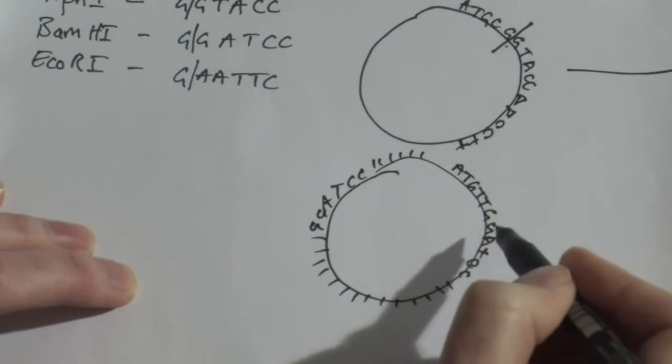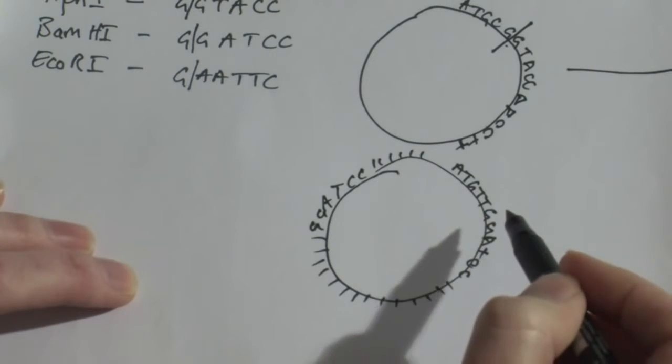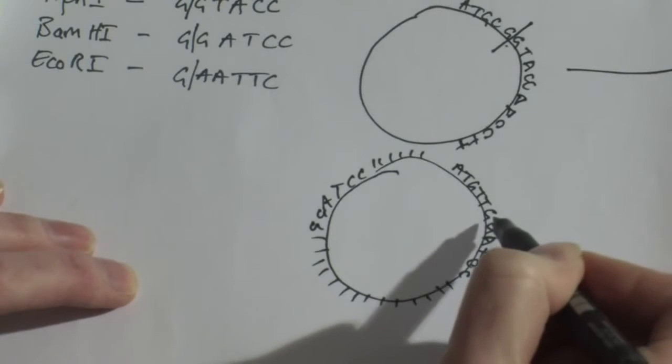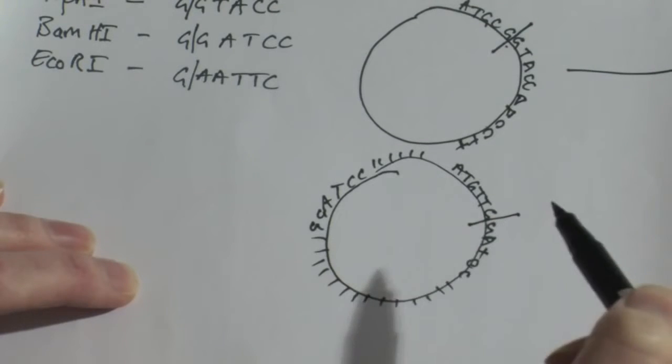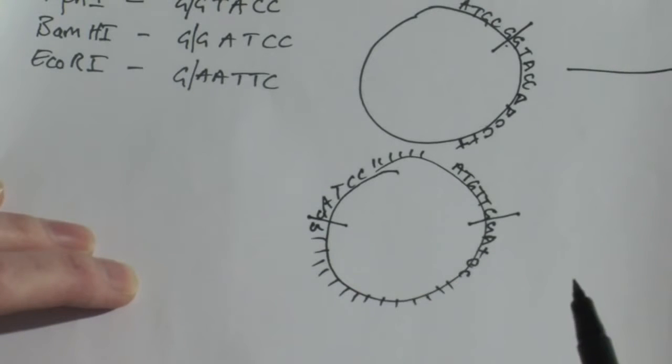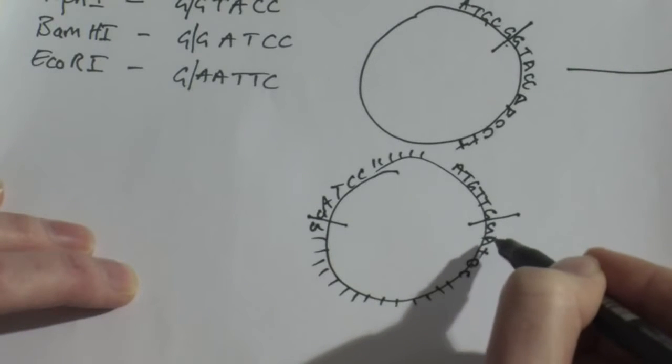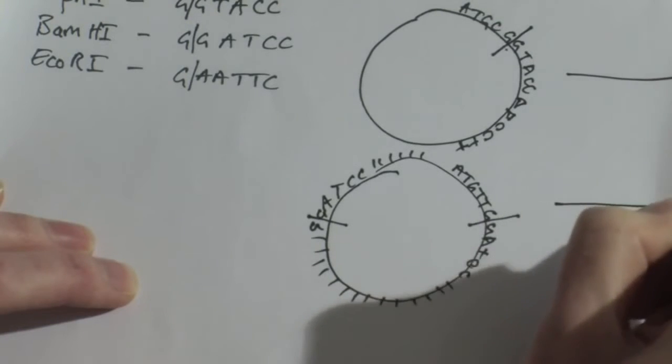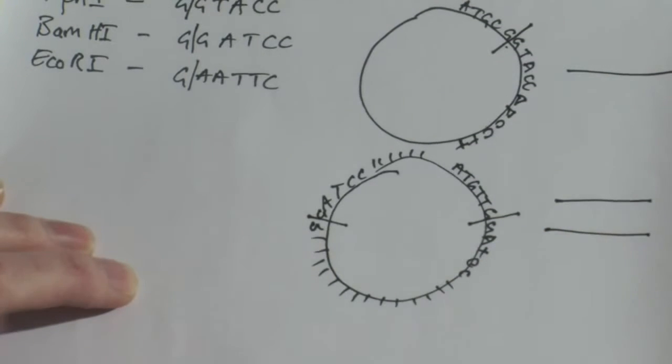If I was to digest this plasmid with BAM H1, BAM H1 has got two restriction sites. There are two sites that the enzyme is able to digest this DNA. So BAM is going to cut there and the BAM enzyme is going to cut there. So my circular piece of DNA has been cut twice and I am left with two fragments of DNA.